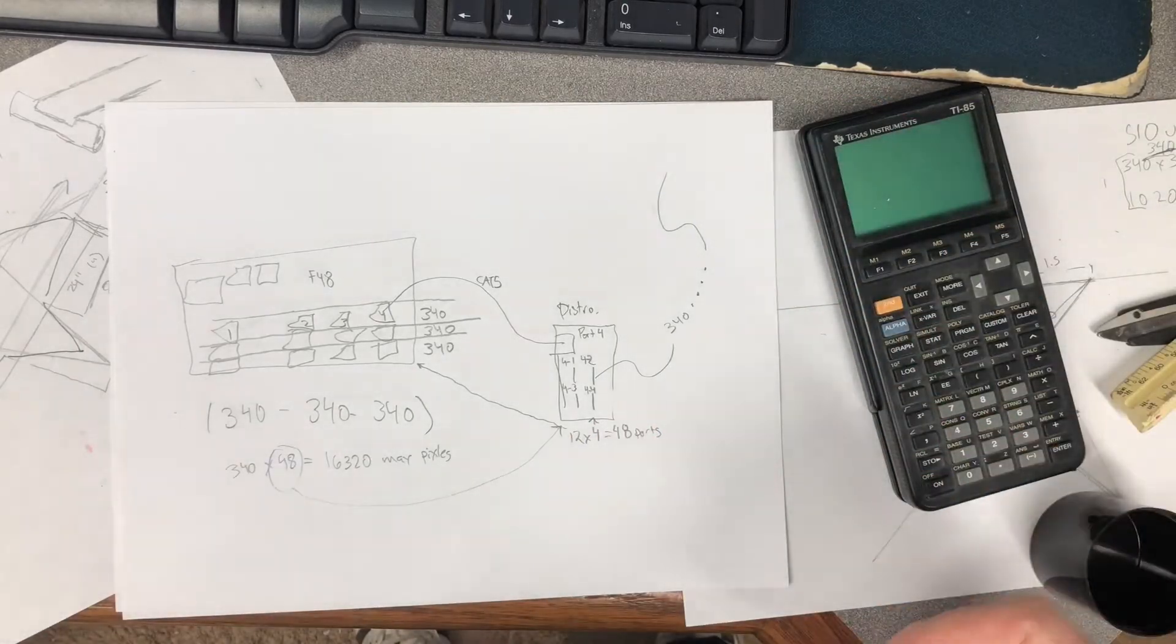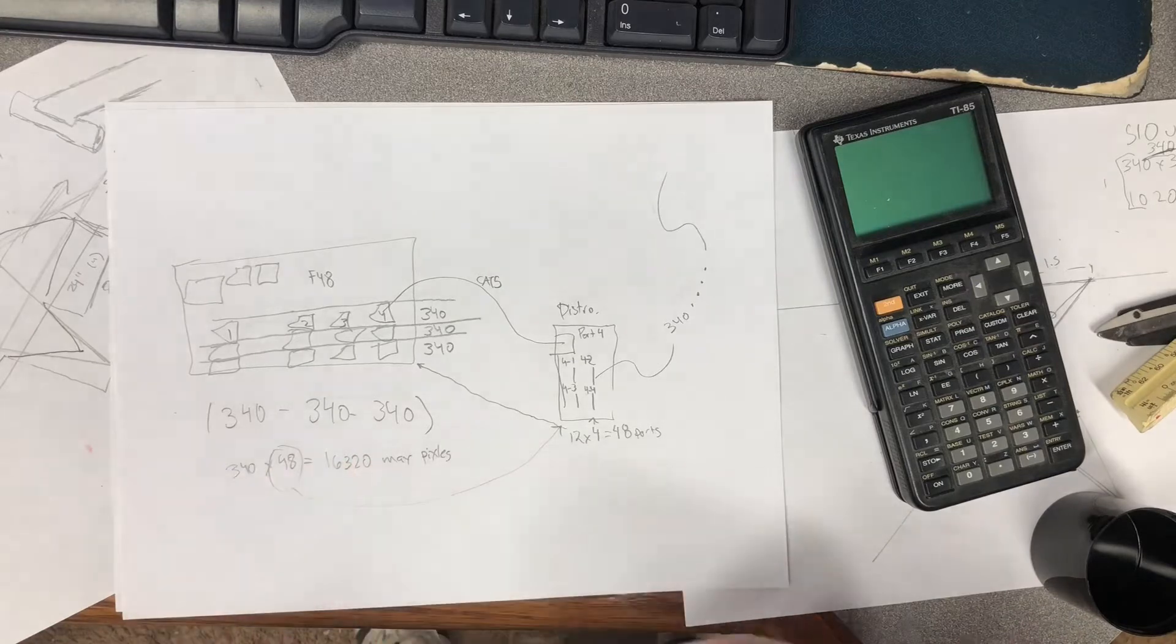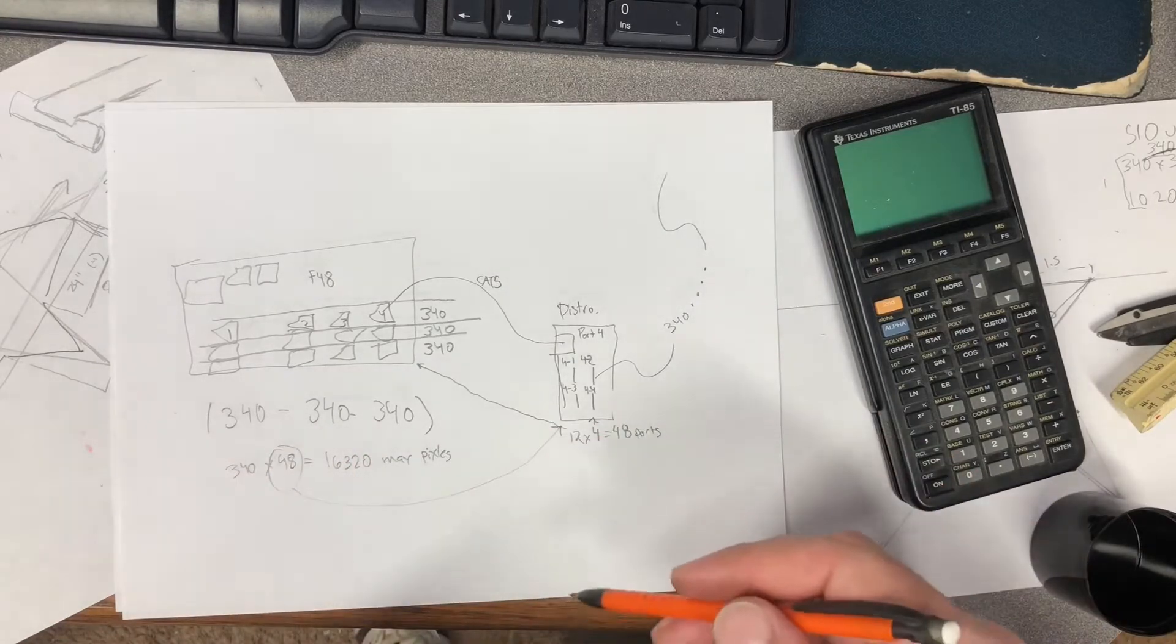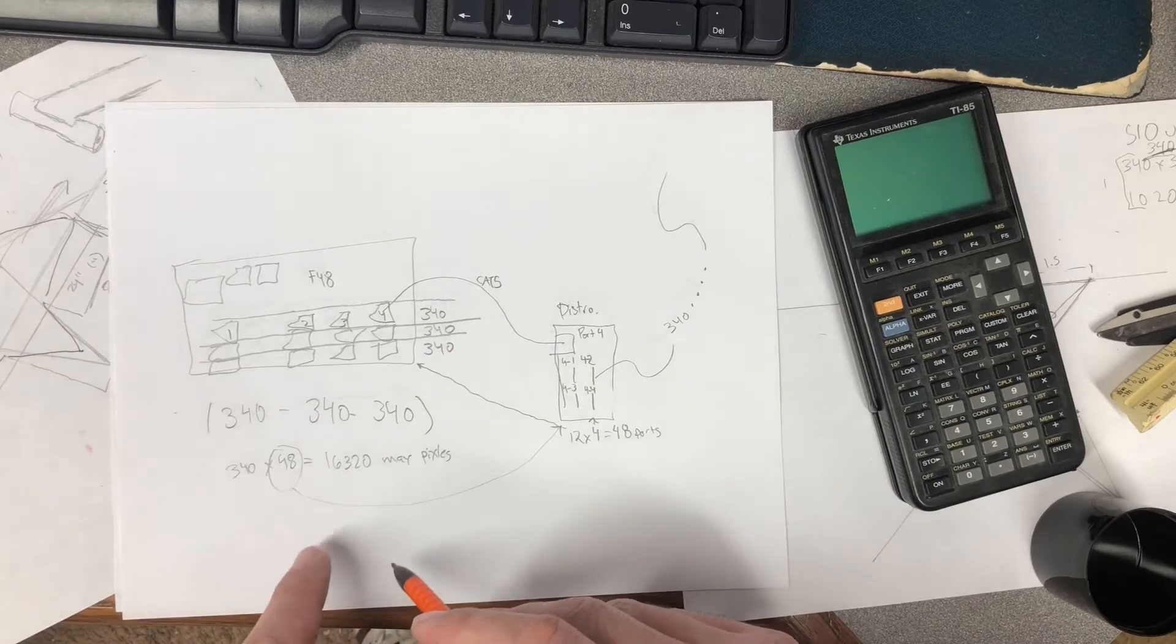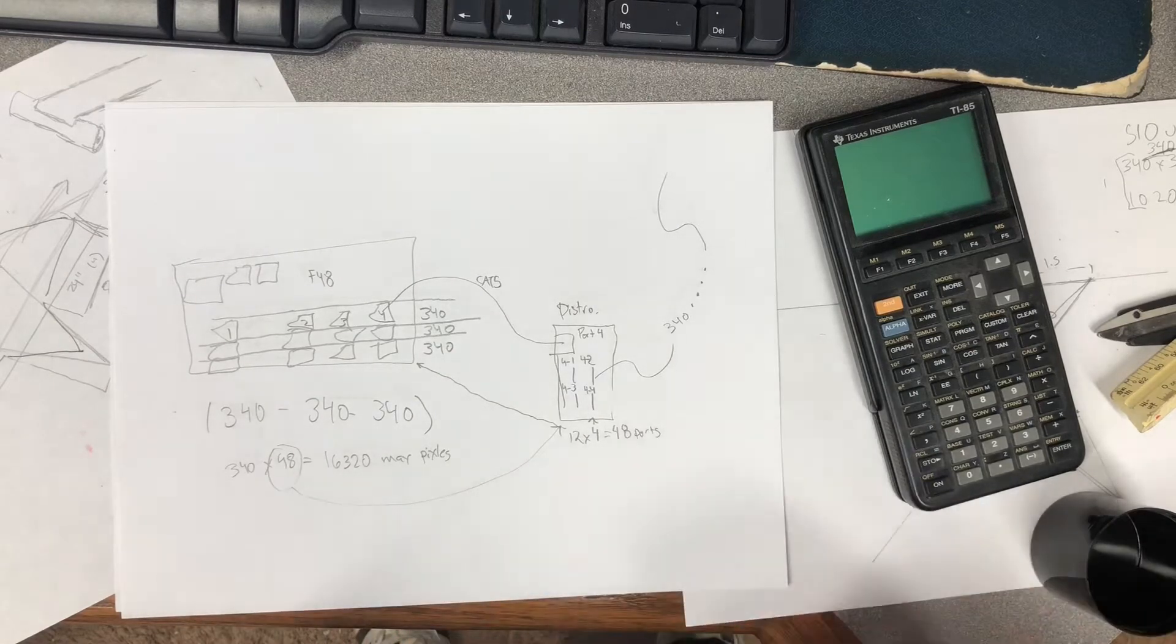Let's take the number 340 divided by 3, which gives us the ability to have 16,320 pixels by 48 ports. So what do we mean by a port?